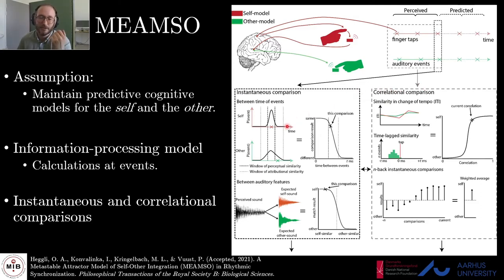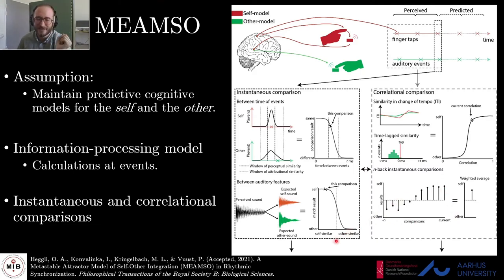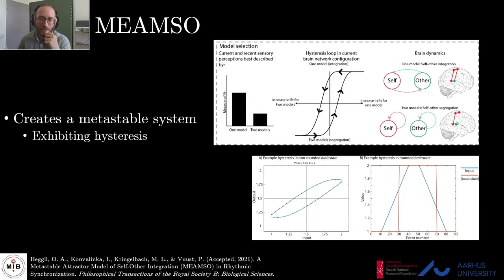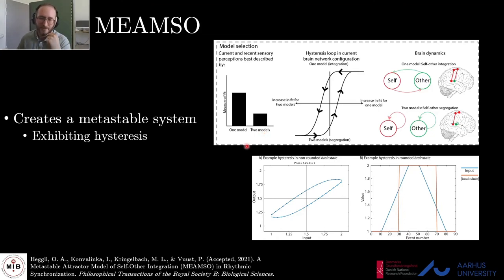The instantaneous comparisons are between the timing of coinciding events and their auditory features, each producing a value indicating whether the current event should be attributed to yourself or to the other person. The correlational comparisons take into account previous events — such as time-lag similarity to account for a constant delay — as well as accumulating previous instantaneous comparisons. These output values are then summed in favor of an event being best described by one unified predictive model (what I'm hearing is closely related to what I'm doing) or two separate predictive models (what I'm hearing is related to what I predicted the other person is doing). This creates a metastable system with two attractors: one representing self-other integration and one representing self-other segregation.